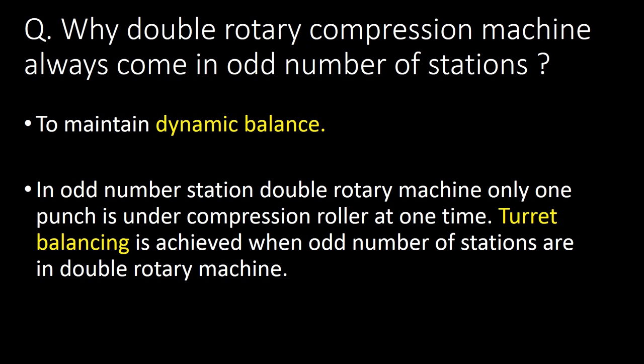Why does a double rotary compression machine always come in an odd number of stations? Two key concepts in the answer are dynamic balance and turret balancing. Double rotary compression machines always come in odd numbers of stations to maintain dynamic balance. In an odd number of stations, only one punch is under the compression roller at one time, and turret balancing is achieved when odd number of stations are used.